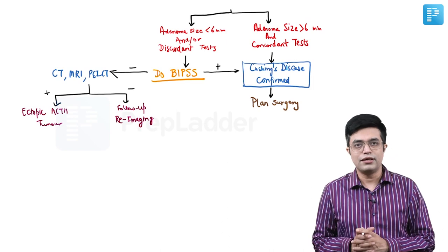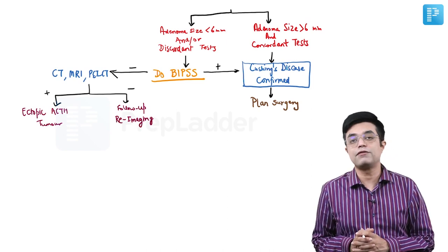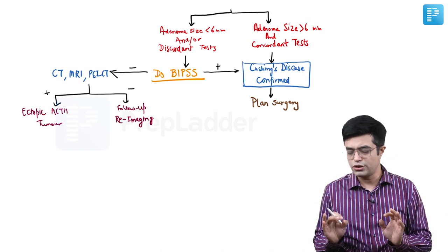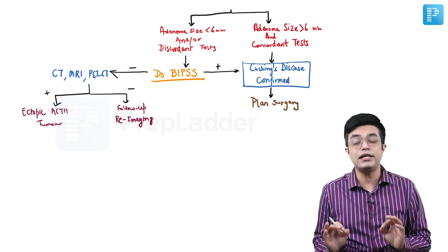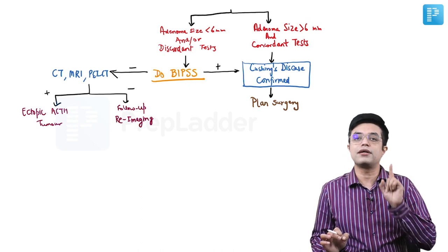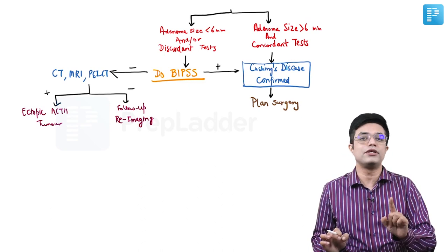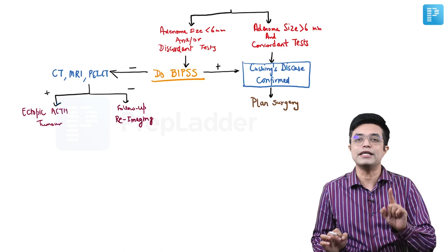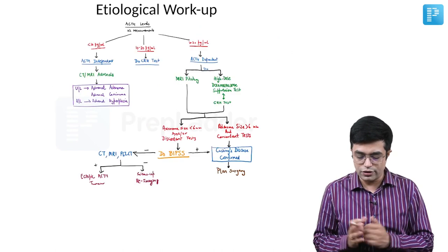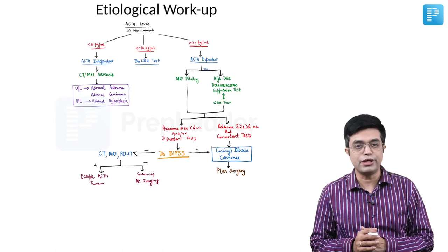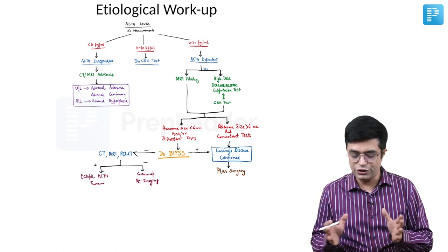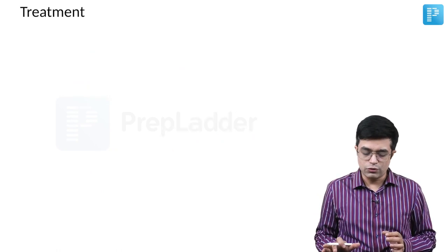This flowchart is similar to what is described in most western textbooks. This is the etiological workup to be performed only once Cushing syndrome diagnosis has been confirmed. This is the summary of the entire flowchart.